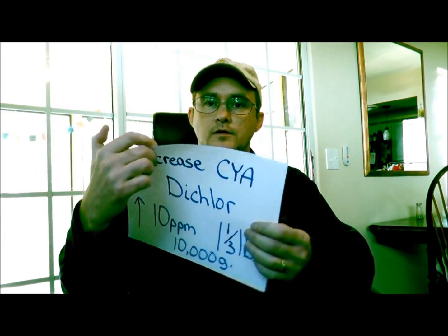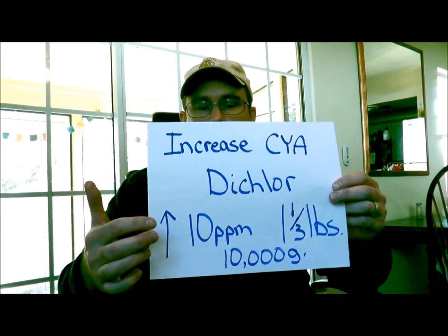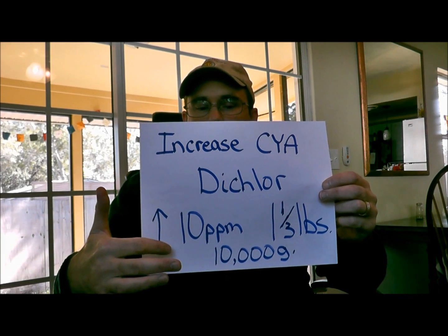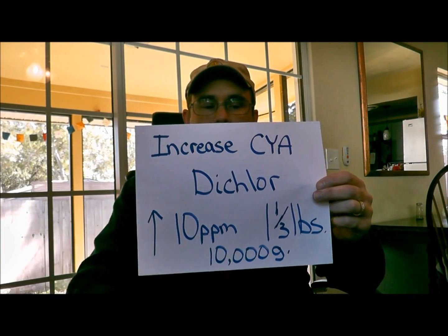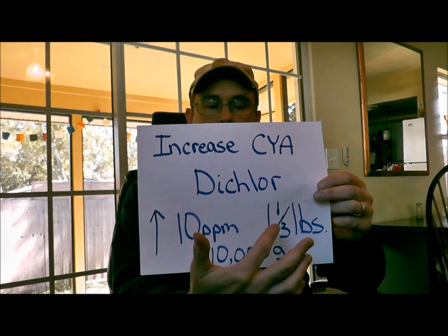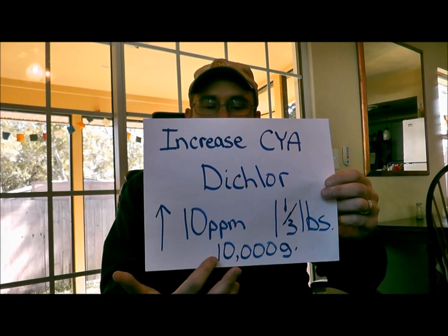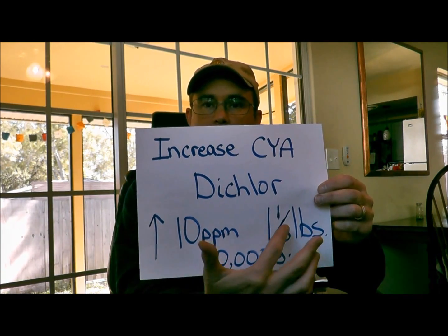Let's define high and low. Low is 20, 10, and obviously zero. If it's low, then you need to shock with dichlor chlorine — this is a stabilized form of chlorine. When you shock the pool, be sure that you turn your chlorine generator off. To increase your cyanuric acid using dichlor, you use one and a third pounds to raise it 10 parts per million per 10,000 gallons. If you have to raise it 20 parts per million, you double the adjustment. If you have a 20,000 gallon pool, simply double the amount.